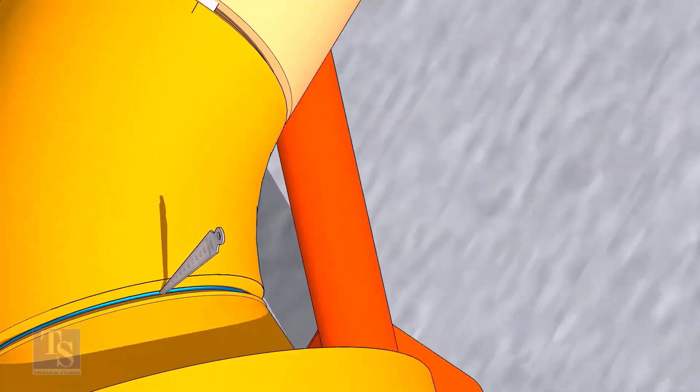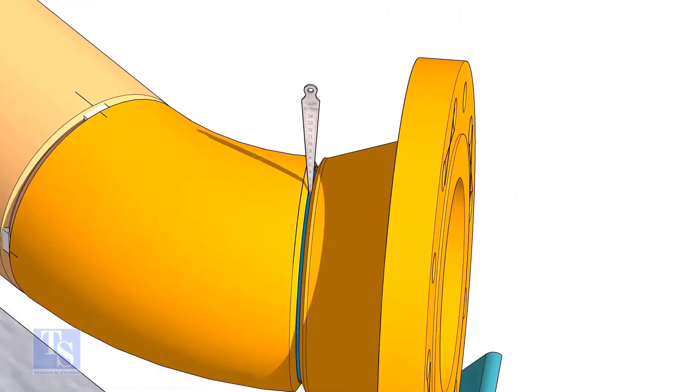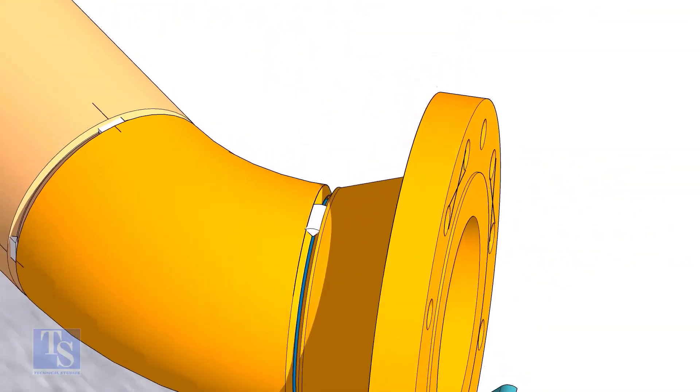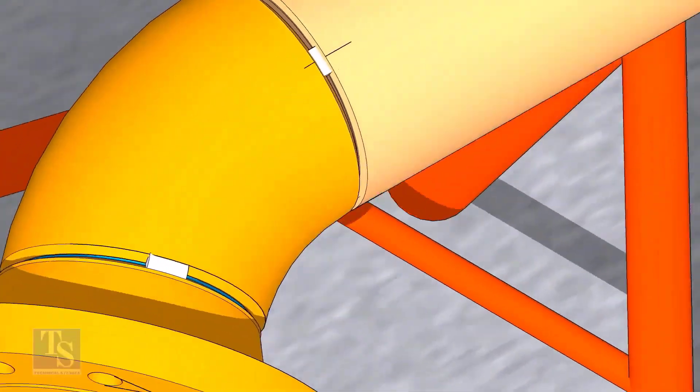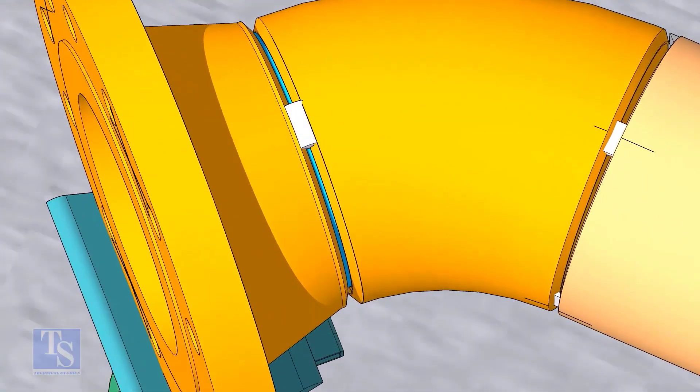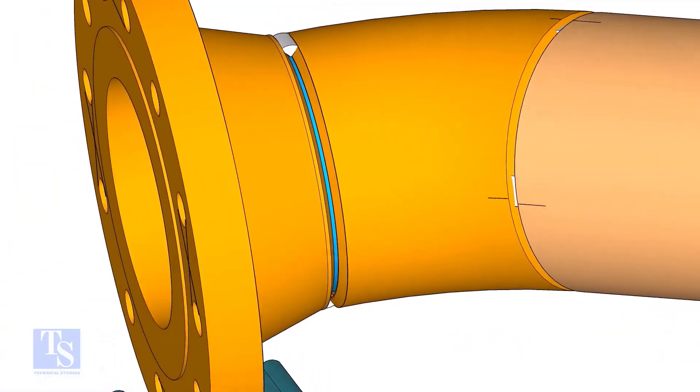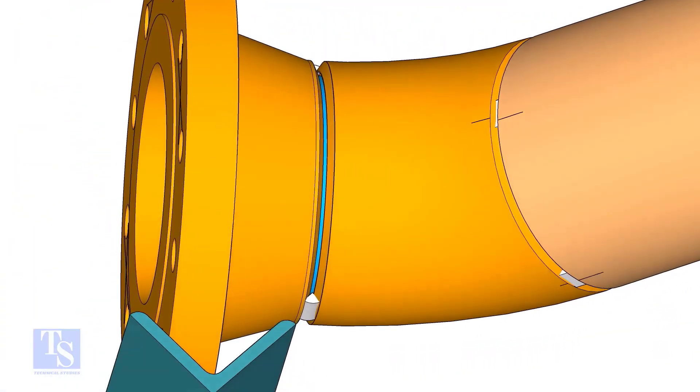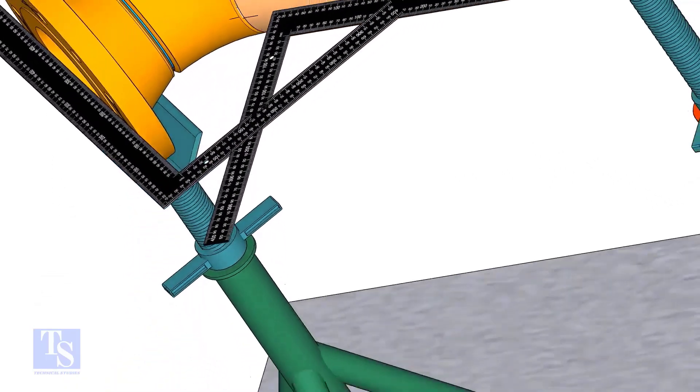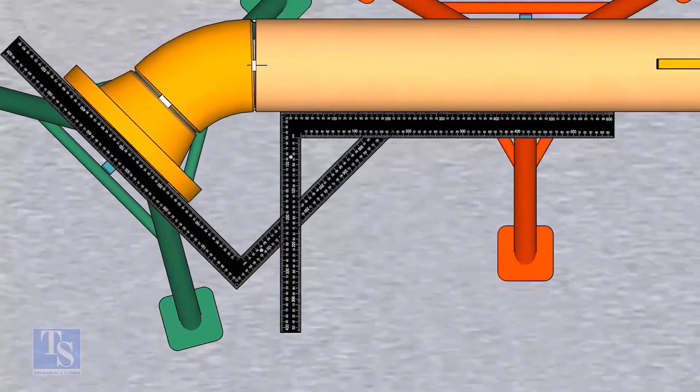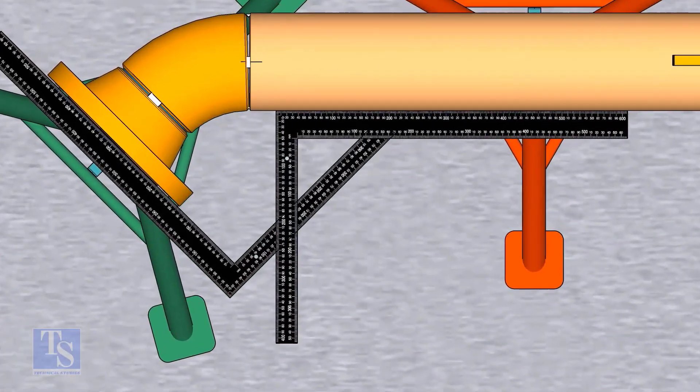Tack weld on the top and bottom sides of the joint. Check the degree of the flange face to the pipe.